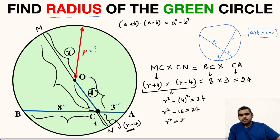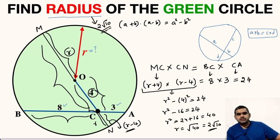R squared will be 24 plus 16, this will be 40. R will be square root of 40 which is 2 root 10. The radius of this green circle will be 2 root 10 units.